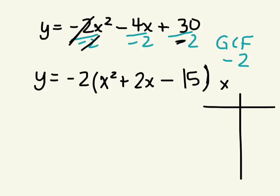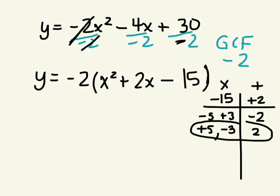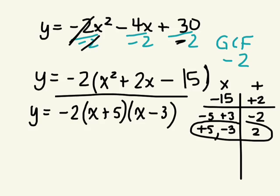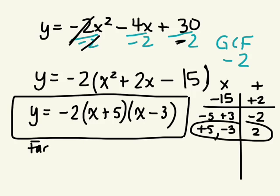Looking for two things that multiply together to give us negative 15 and adds up to positive 2. Negative 5 and positive 3 equals negative 2. So that doesn't work. Try positive 5 and negative 3. That adds up to 2. This one works. So what is this in factored form? y equals negative 2 bracket, x plus 5, bracket, x minus 3. And this is the equation in factored form.